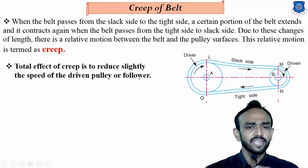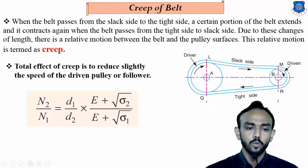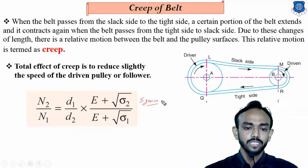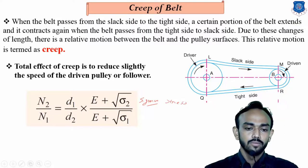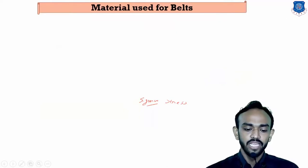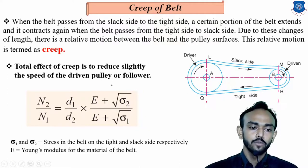The total effect of creep is a very small reduction in the speed of the driven pulley. The equation used for creep is: n2/n1 = (d1/d2) × (√σ1 + E)/(√σ2 + E), where σ1 and σ2 are the stresses in the belt on the tight side and slack side respectively, and E is the Young's modulus of the belt material.